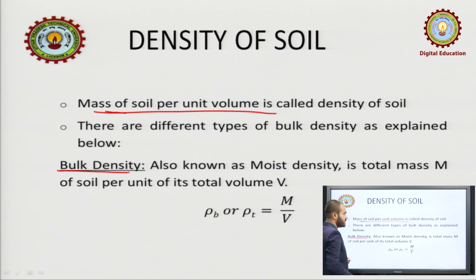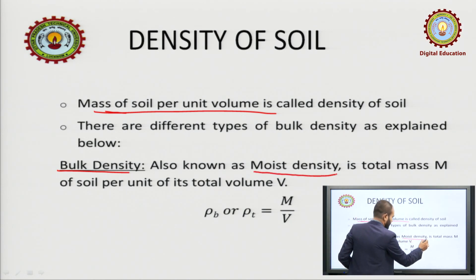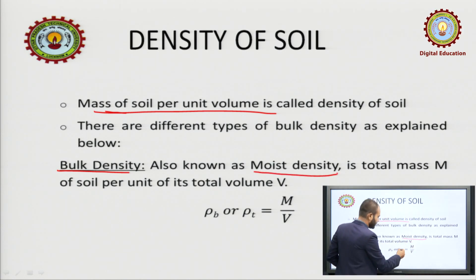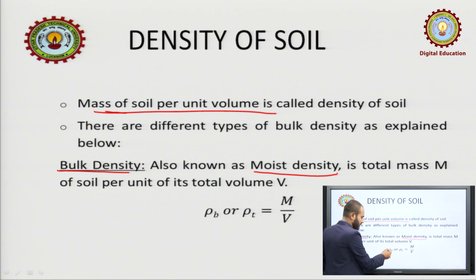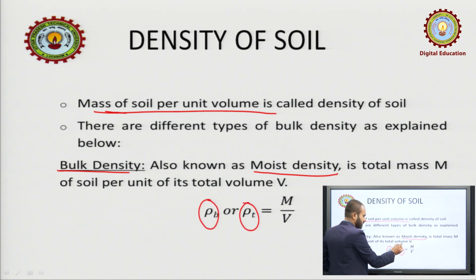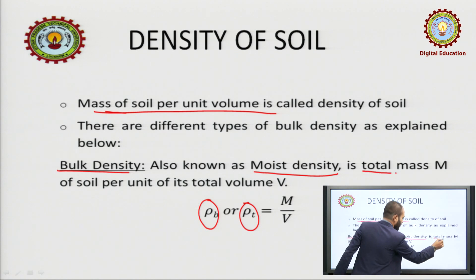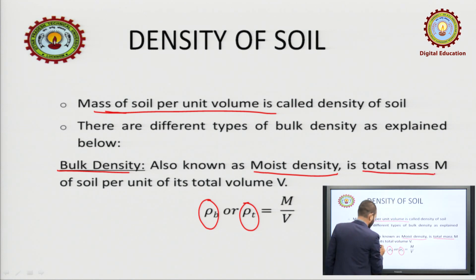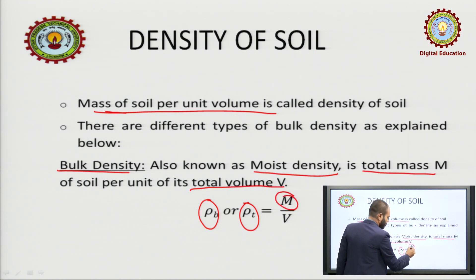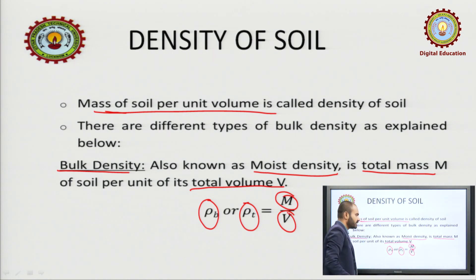What is bulk density? It is also known as moist density. It is represented by rho-b or rho-t. It is the ratio of total mass to total volume.